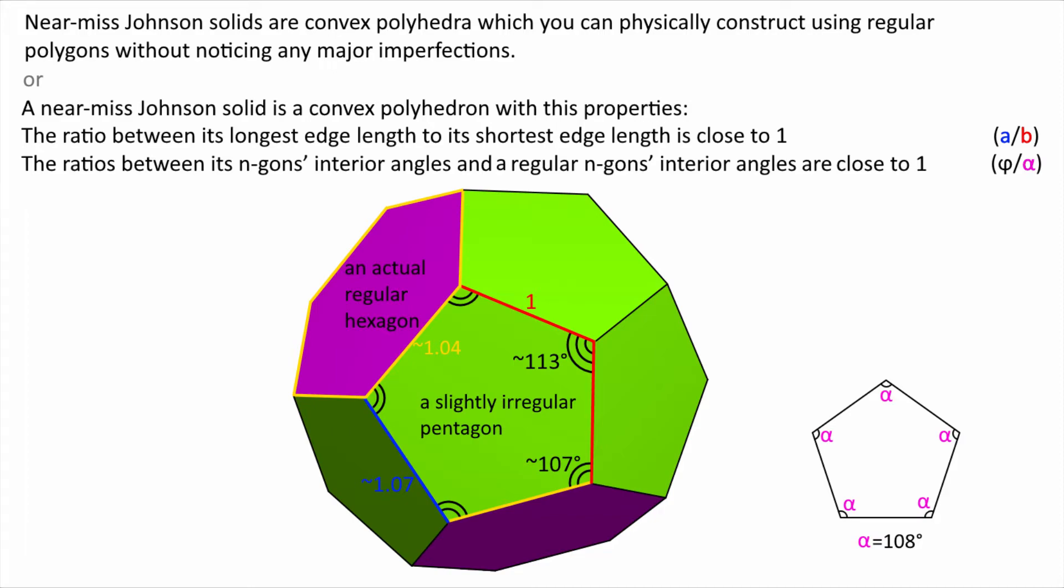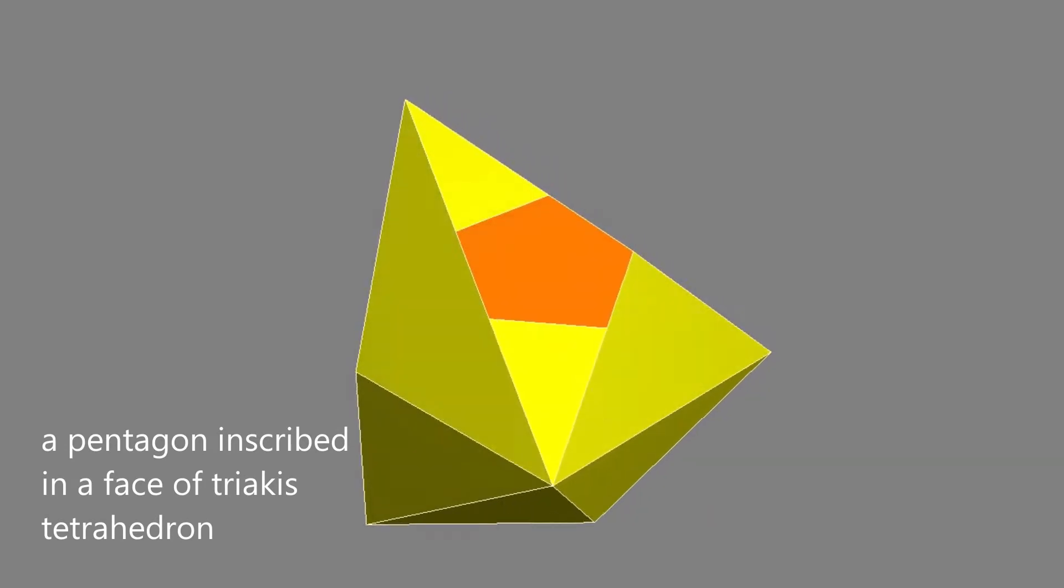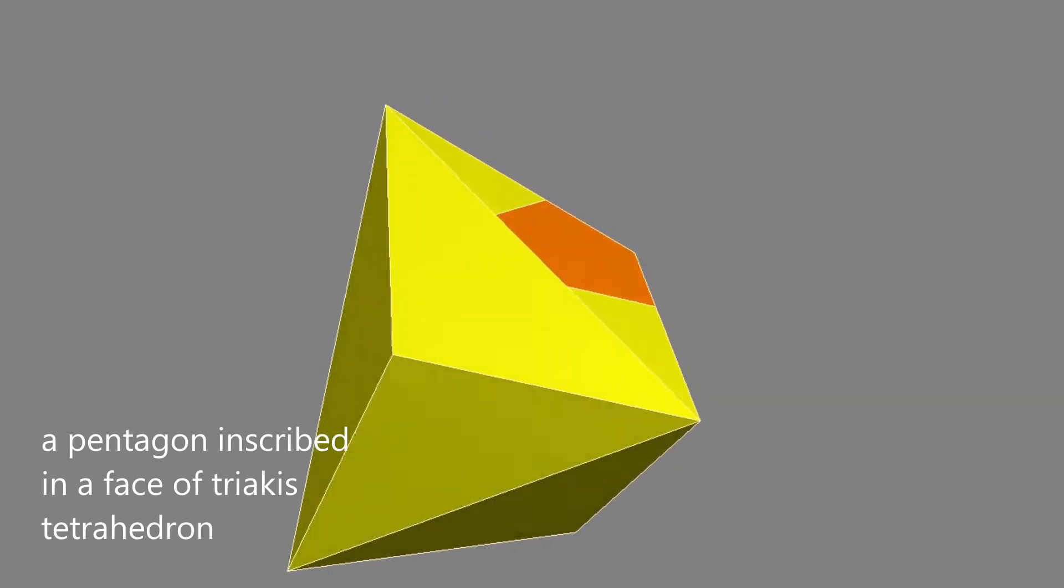A great way to construct some of the near-misses is to inscribe an almost regular polygon into a face of some existent polyhedron. Here are some examples.